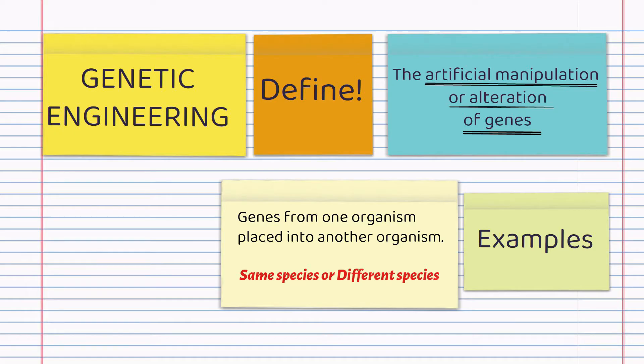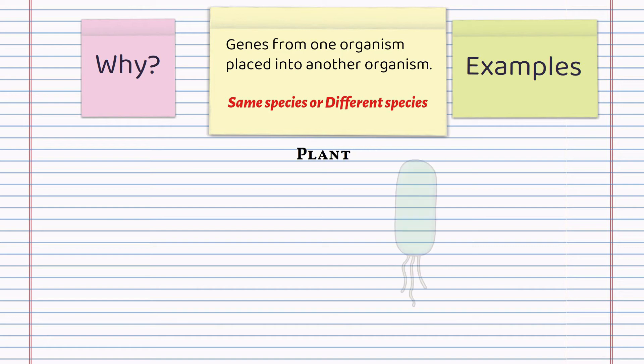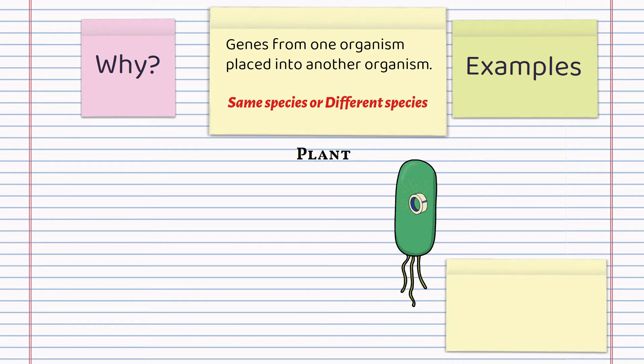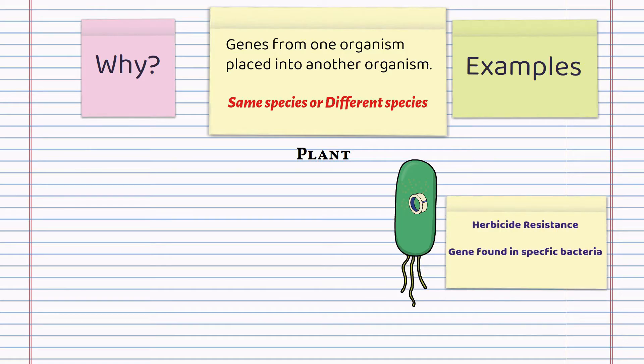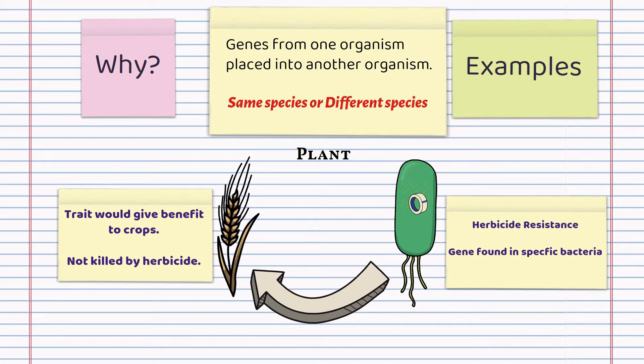Why would you want to do that? Well, there has to be some benefit. A plant example is the creation of herbicide-resistant crops. The gene for resistance was discovered in a particular bacterium, and this gene was then inserted into certain crops. This meant that they too now exhibited the trait for resistance to this particular herbicide. The farmer could spray his land with the herbicide. The weeds were killed, but not the crops.